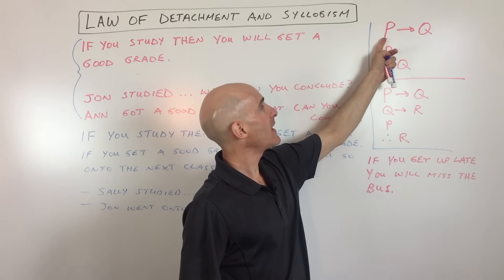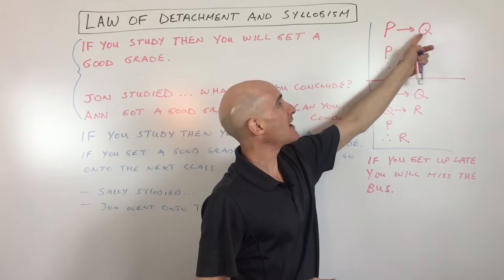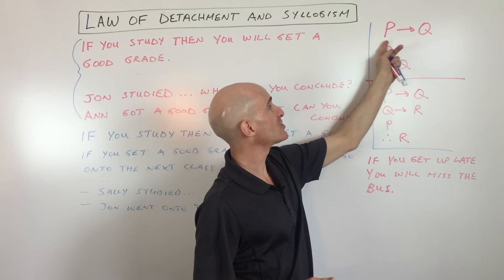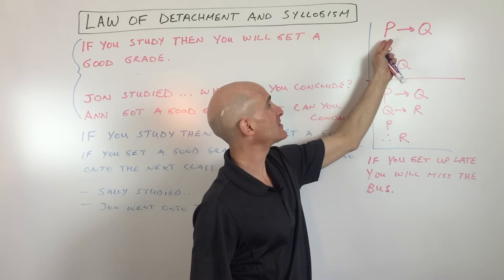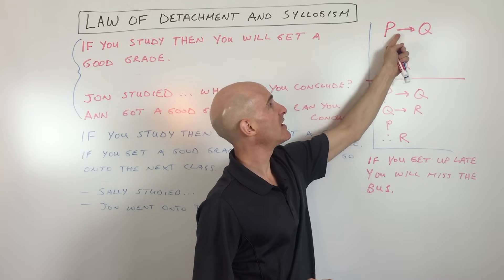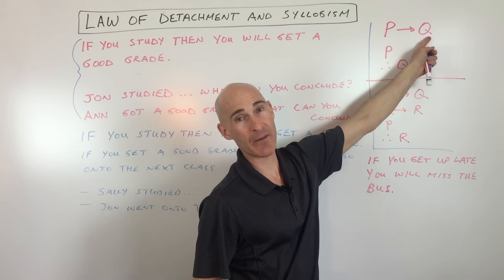The law of detachment basically tells us if P, then Q. This is just a condensed way of writing it, but basically if the hypothesis happens, then the conclusion will happen.